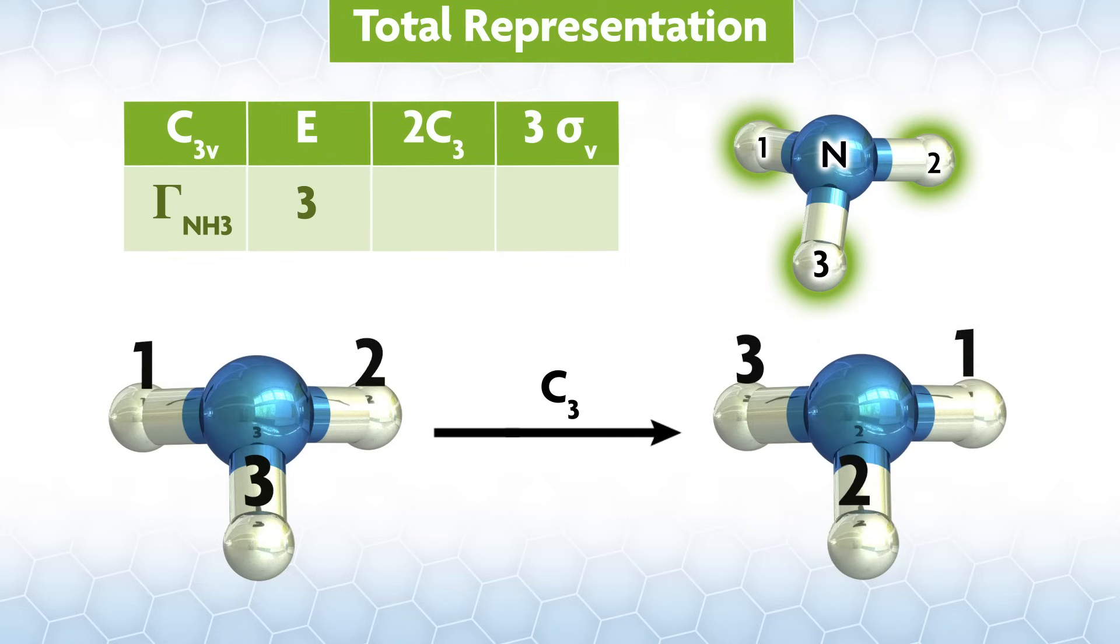If we do a C3, one goes to two, two goes to three, and three goes to one, so every part of the basis moves, and we write a zero. There are two C3s, but members of the same class will always do the same thing to your basis, so there's no need to redo this with a C2-3.